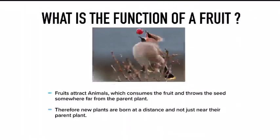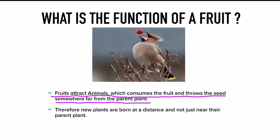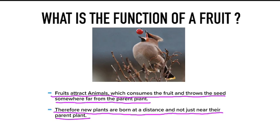Fruits attract animals which consume the fruit and throw the seed somewhere far from the parent plant. This means animals eat the fruit and deposit the seed at a distance from the parent plant, so new plants grow far away and not just near the parent. That is why trees grow in different areas — for example, you can find an apple tree in India and also in Switzerland. This is the function of a fruit.